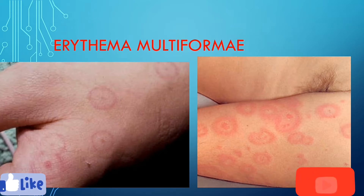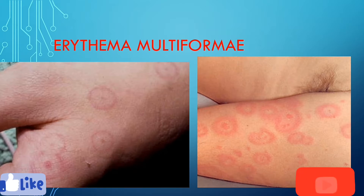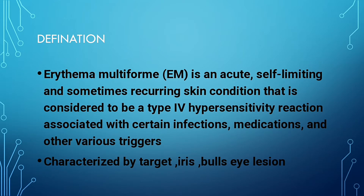In this video we'll be talking about its clinical features, histological features, as well as some treatments. Erythema multiforme is defined as an acute, self-limiting, and sometimes recurring skin condition that is considered to be a type 4 hypersensitivity reaction, associated with certain infections, medications, and other various triggers.